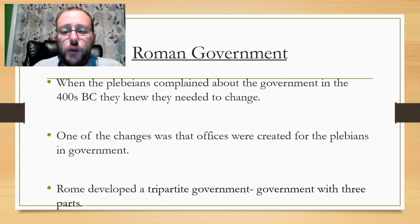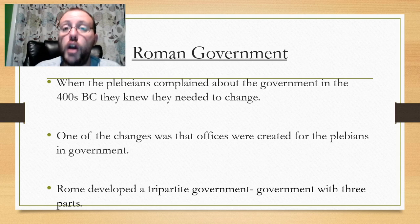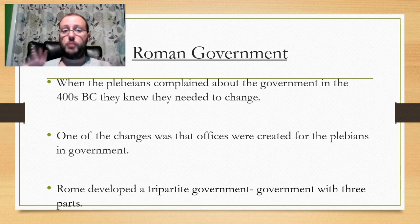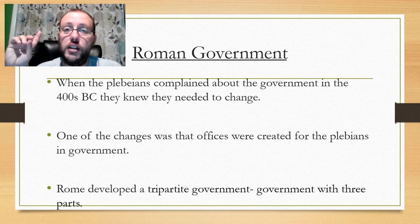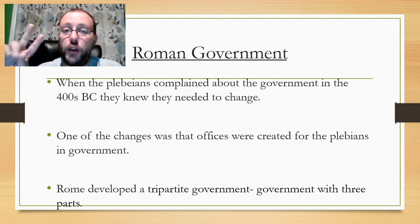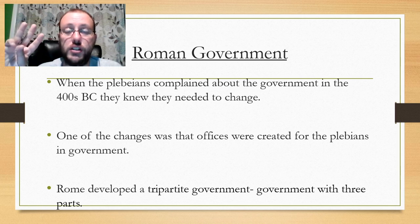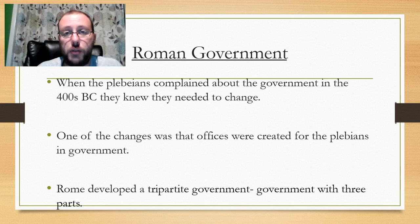Rome developed a tri-partite government, which was a government with three parts. There are a lot of similarities between our government and this government — our government is a tri-partite government too. Remember from civics, you've got three branches: the executive branch, the judicial branch, and the legislative branch. The executive branch is the president and vice president. The judicial branch is the Supreme Court. The legislative branch is Congress, the House of Representatives, and the Senate. The Roman government also had a tri-partite government.